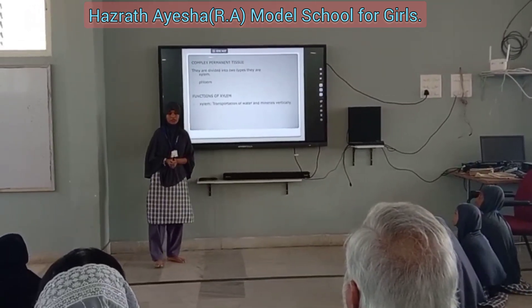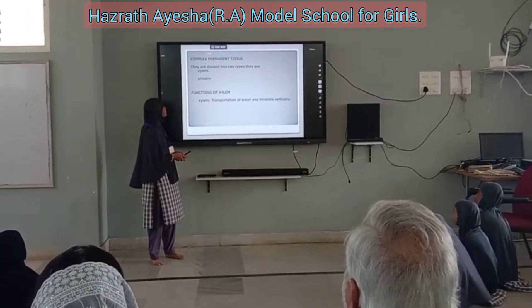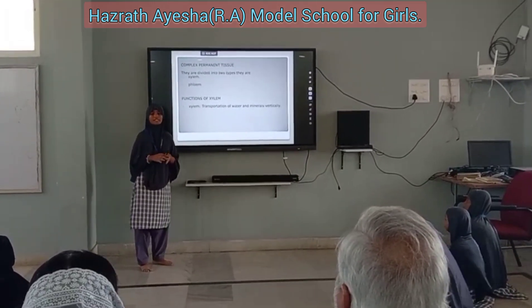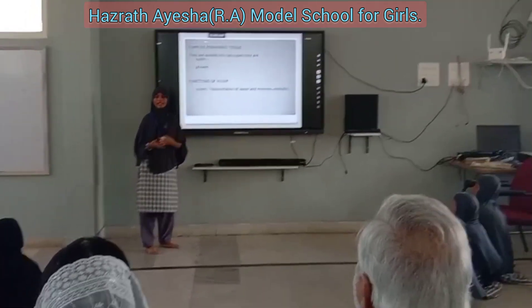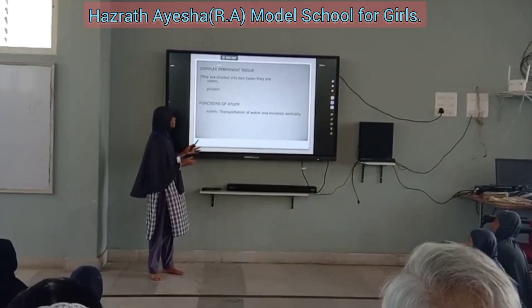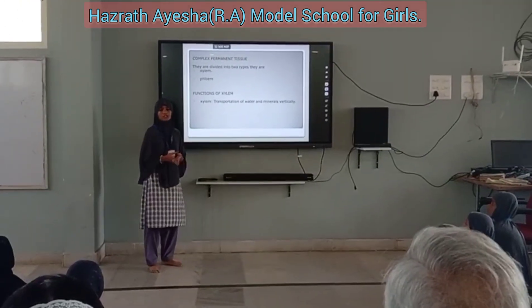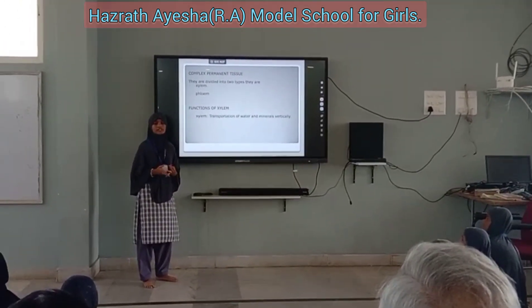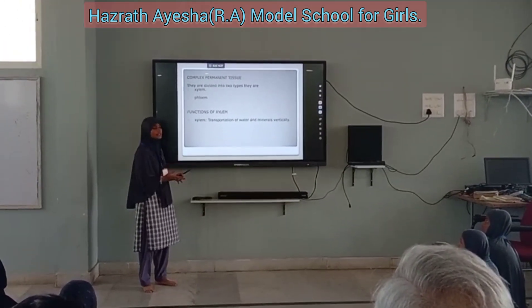Now, vascular tissue — complex permanent tissue. Vascular tissue is of two types: xylem and phloem. The function of xylem is the transport of water and mineral particles.